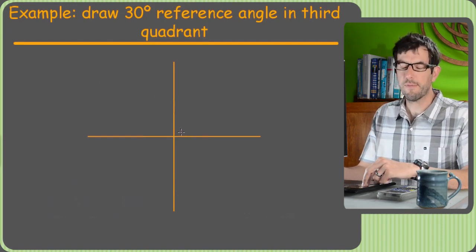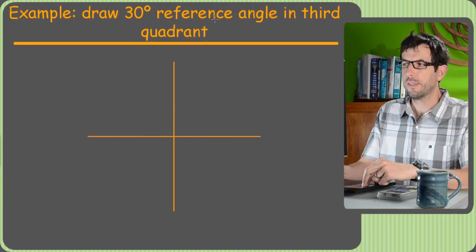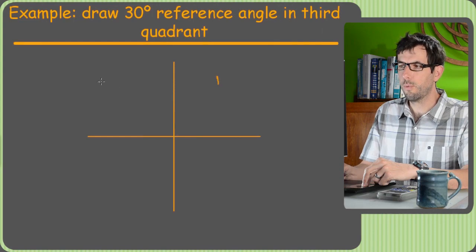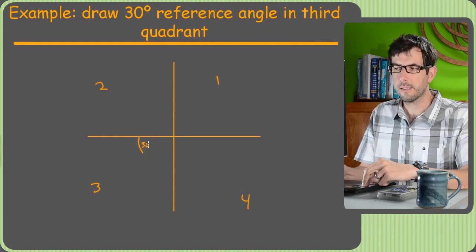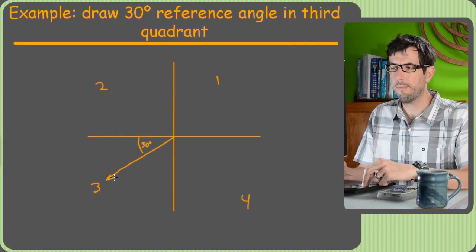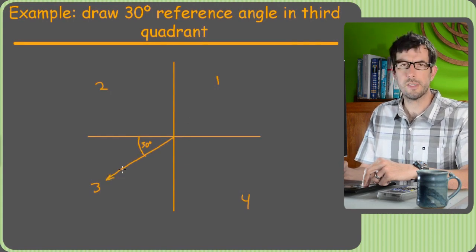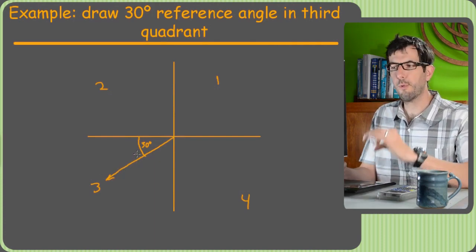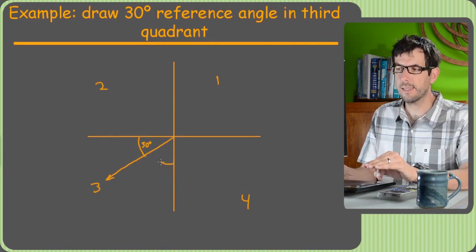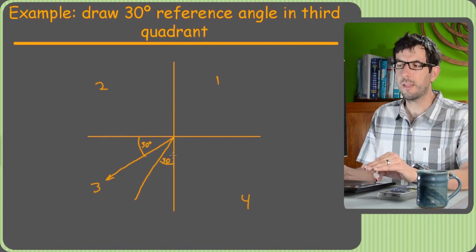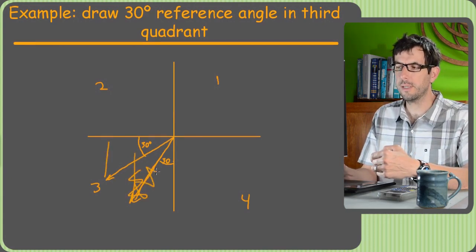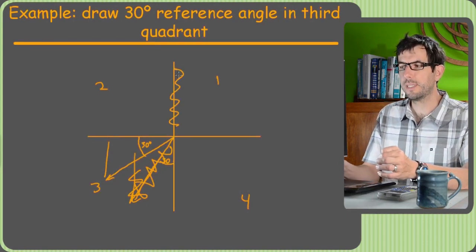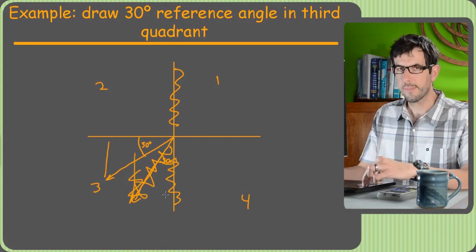Let's practice drawing a couple of reference angles. A 30-degree reference angle in the third quadrant: the quadrants go one, two, three, four — the third quadrant is down here. A 30-degree reference angle means we make an angle of 30 degrees with the x-axis, so just draw a 30 right there. The biggest mistake you can make is accidentally measuring your reference angle from the y-axis. If I had done 30 degrees from the y-axis, I'd end up with a different side and everything's messed up. Always measure from the x-axis — if you have to, just pretend the y-axis isn't there.